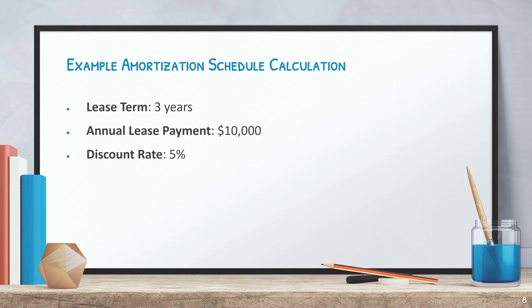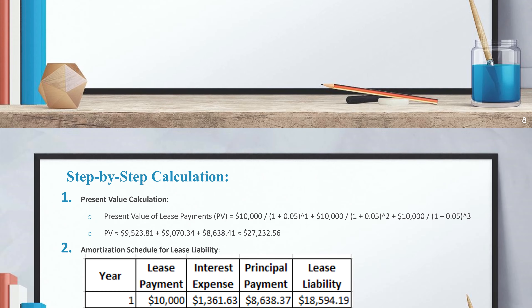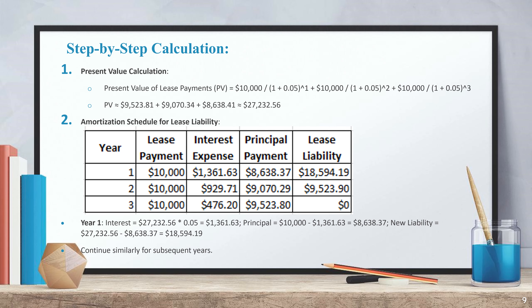Let's look at an example. Assume the following lease details: three-year lease term, annual lease payment of ten thousand dollars, and a discount rate of five percent. Using the present value formula, the present value of the lease payments is approximately twenty-seven thousand two hundred thirty-two dollars and fifty-six cents. This amount becomes the initial lease liability.